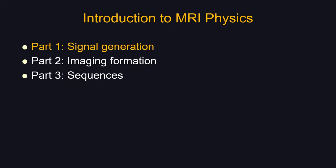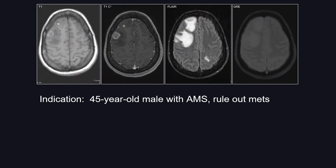Let's start with a case. The indication here is a 45-year-old man with AMS and known metastases. There are multiple images: T1, T1 post-contrast, FLAIR, and GRE. As you can clearly see, there are multiple intraaxial lesions with a variable amount of edema on FLAIR. When you look at GRE, there is no susceptibility artifact. Based on these images, what do you think is the most likely diagnosis and what's your differential?